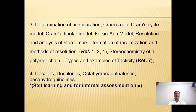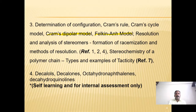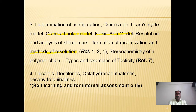Chapter 3 covers determination of configuration, including Cram's rule, Cram's cyclic model, Cram's dipolar model, the Felkin-Anh model, resolution and analysis of stereoisomers, formation of racemization, and methods of resolution. References 1 to 4 are to be referred. The chapter also covers stereochemistry of polymer chains, including types and examples of tacticity, for which reference 7 is to be consulted.